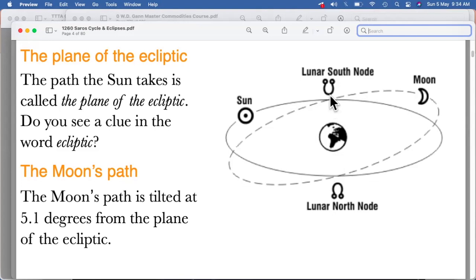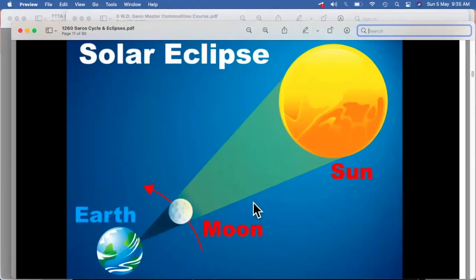But also the north and south node, the Saros cycles, are also being numbered on the basis of this part. So we have seen that during a solar eclipse, the moon is between the sun and the earth.